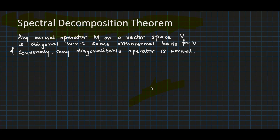In this video we will talk about the spectral decomposition theorem, which states that any normal operator M on a vector space V is diagonal with respect to some orthonormal basis for V, and conversely any diagonalizable operator is normal.